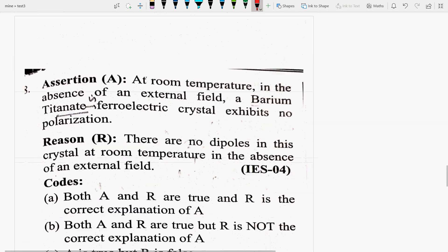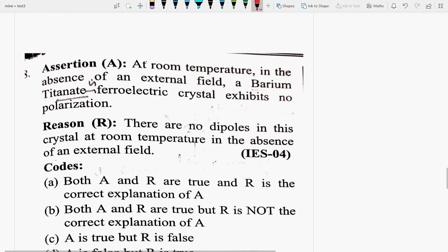Next question is your question. At room temperature in the absence of an external field, barium titanate is ferroelectric crystal exhibits no polarization. Because there are no dipoles in the crystal at room temperature in the absence of an external field. Look, these two statements actually are false. Both statements are false. Because barium titanate is ferroelectric, BaTiO3. This is a ferroelectric.